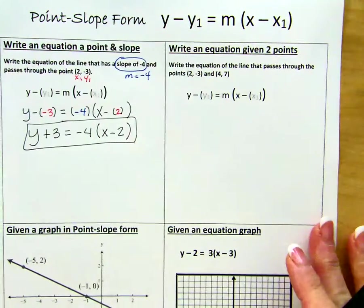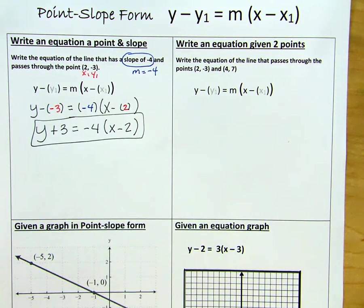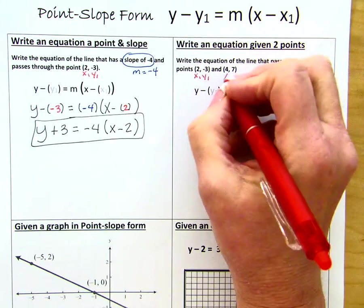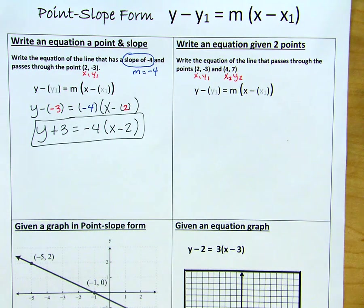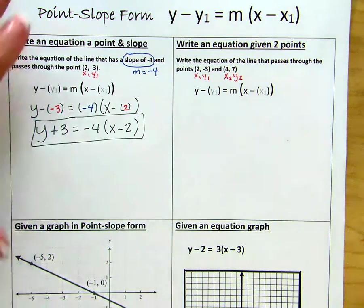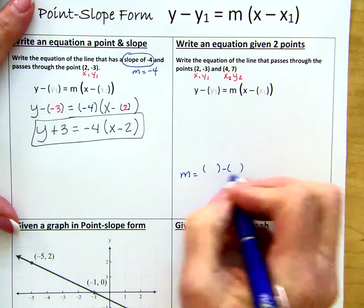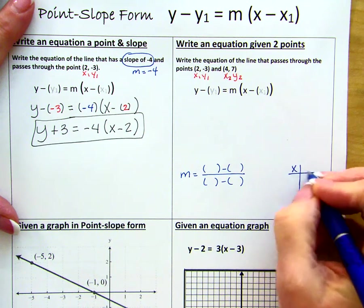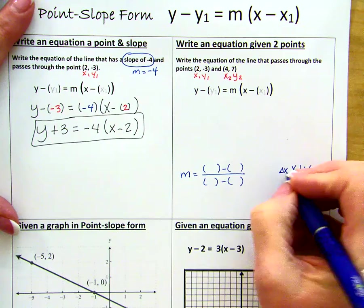Okay, so now we have an example for when we're given two points. So here we have x sub 1, y sub 1, and this point will be x sub 2, y sub 2. And in order to find the slope, we can do one of two things. We can use the skeleton for the formula for slope, or we can make a table of values and do change in y and change in x.